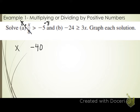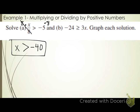Does my inequality symbol flip or stay the same? I hear both flip and stay. There's a negative in the problem, but did I multiply both sides by a negative? No — I multiplied both sides by positive 8. I've got to multiply both sides by a negative for it to flip. So the symbol stays the same. My solution is x is greater than negative 40.